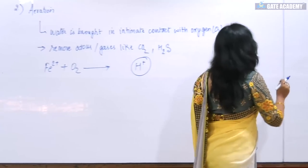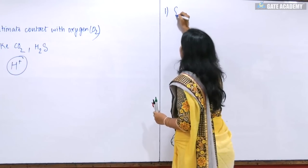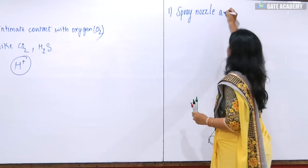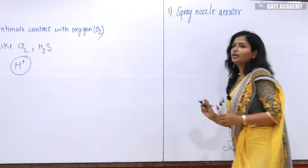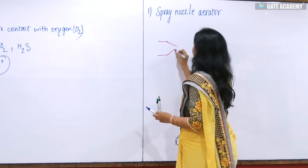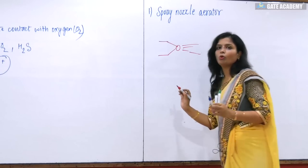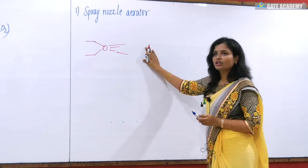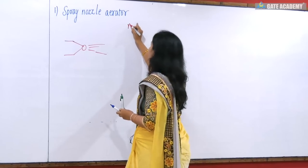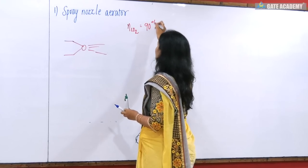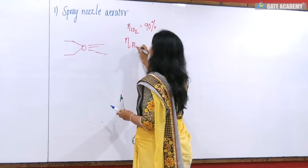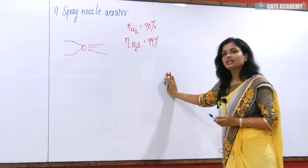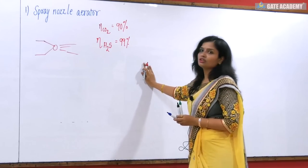The first aerator is the spray nozzle aerator. Here, we are ejecting water with the help of pumps and making the water come in contact with oxygen. This is very efficient — its efficiency for removing carbon dioxide is 90 percent, and for H2S gas it is 99 percent. It is a highly reliable source but it is very costly, so basically we do not use this source from an economic point of view.